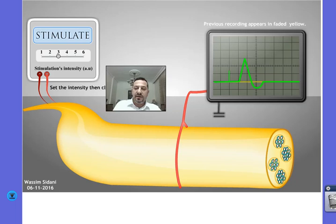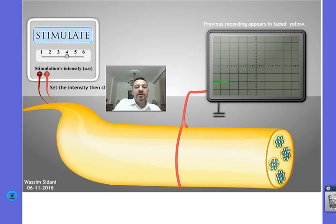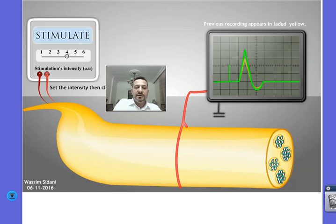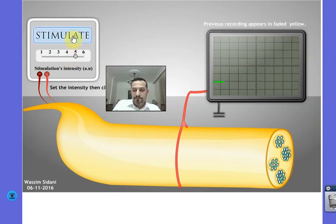Now let's increase the intensity to I4 and apply a new stimulation. Note that the amplitude of the global potential has increased, with the previous global potential shown in faded yellow. Then we increase the intensity to I5 and apply a new stimulation, and again the amplitude of the global potential increases.